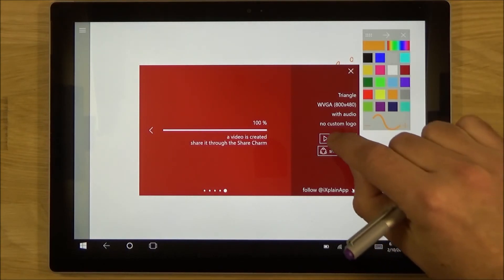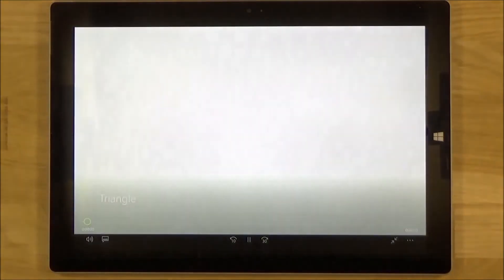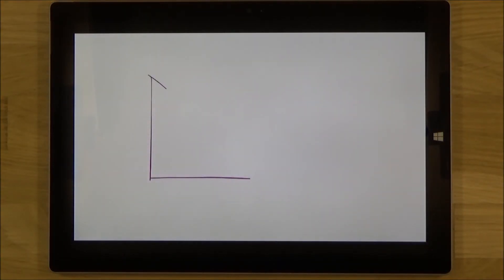We can immediately view the video. Here we have a triangle with the angle alpha, beta, gamma is 180 degrees.